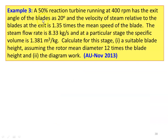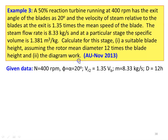Problem 3: A 50% reaction turbine running at 400 rpm has blade exit angle phi = 20°, and the velocity of steam relative to the blade at exit Vr2 = 1.35 × Vb. Steam flow rate is 8.33 kg/s, specific volume at this stage is 1.381 m³/kg, and rotor mean diameter is 12 times the blade height. Calculate the blade height and diagram work.